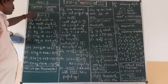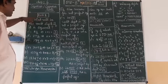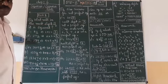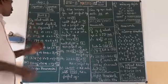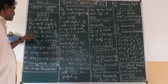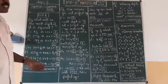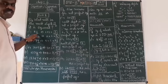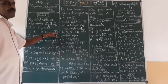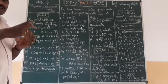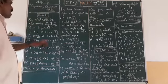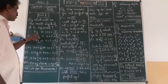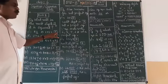The first question asks: what will be the unit digit of a number when it is squared? So if a given number is squared — multiplied two times — what will be the unit digit? For the first number, 81, don't multiply 81 by itself fully. Just take the unit digit, which is 1, and multiply: 1 into 1 is 1. So when you multiply 81 into 81, the unit digit in the answer is 1.